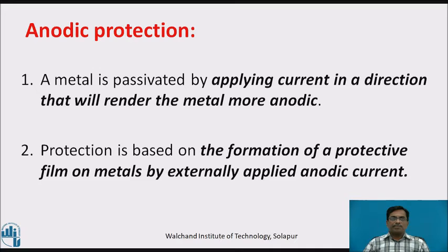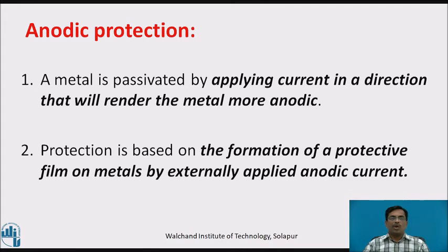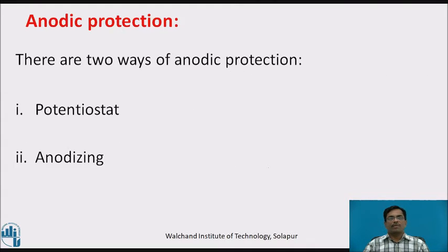Anodic protection: a metal is passivated by applying current in a direction that will render the metal more anodic. Protection is based on the formation of a protective film on metals by an externally applied anodic current. Anodic protection is carried out by two different mechanisms: the first is the potentiostat and the second is anodizing.